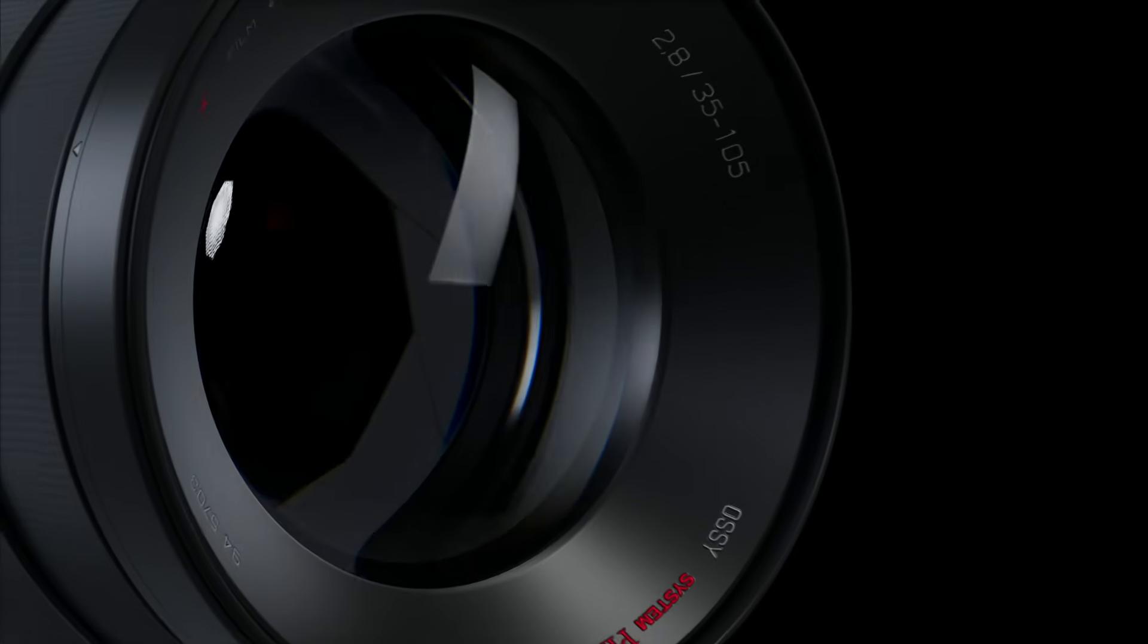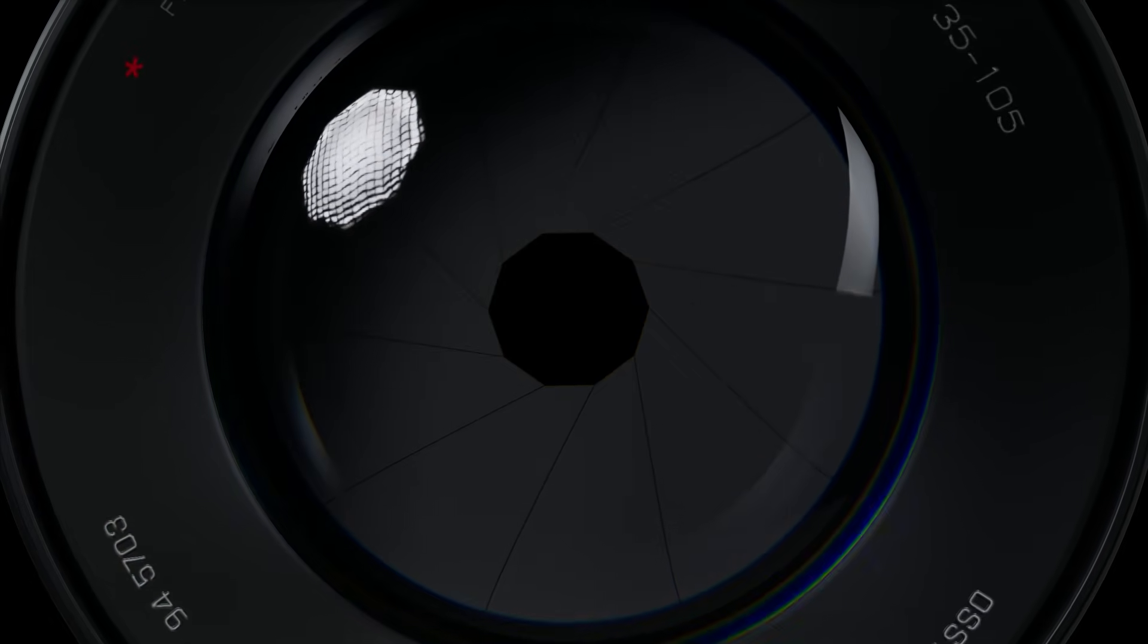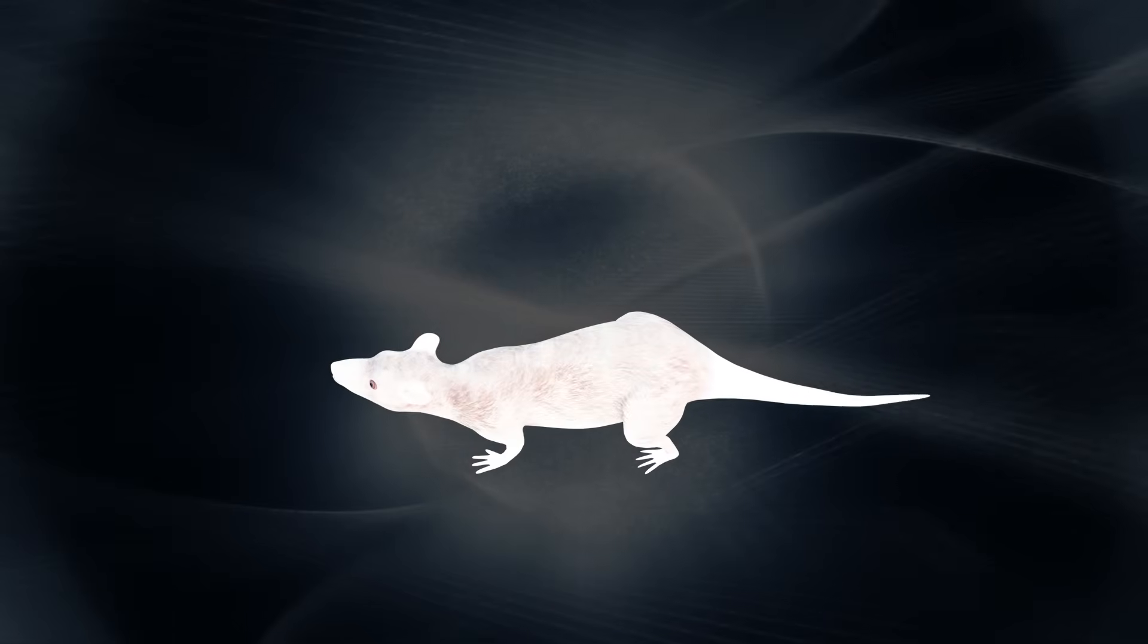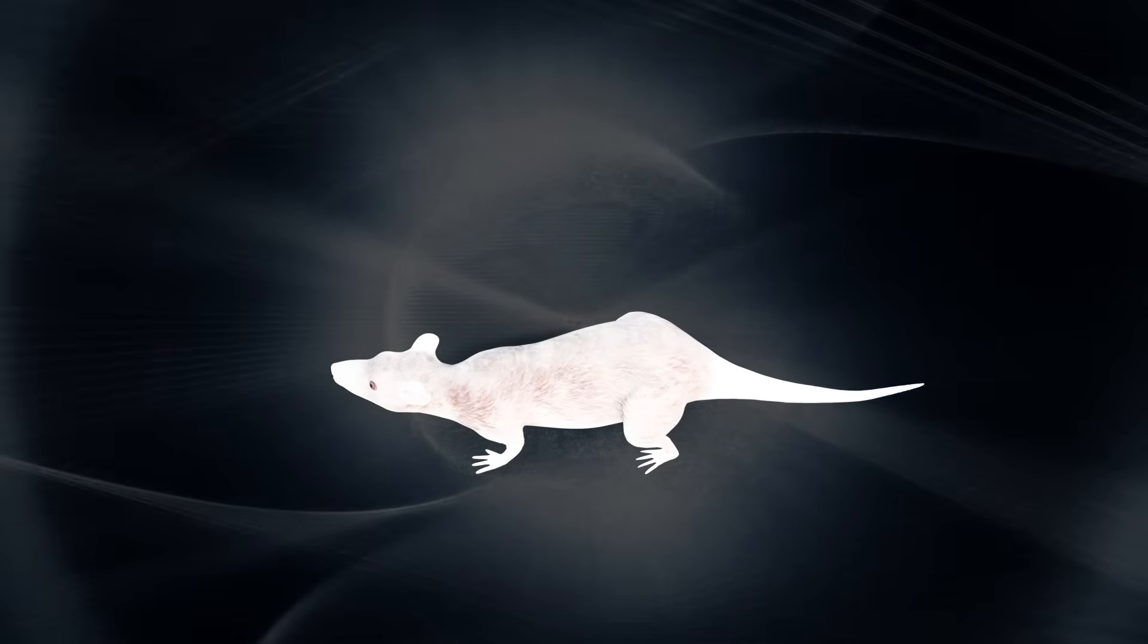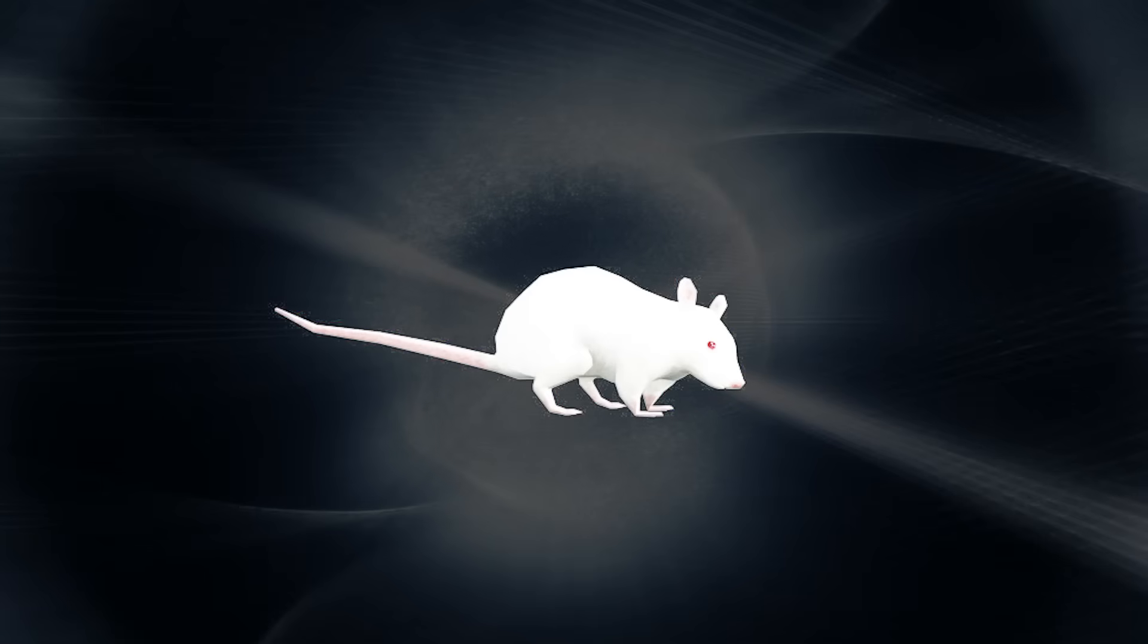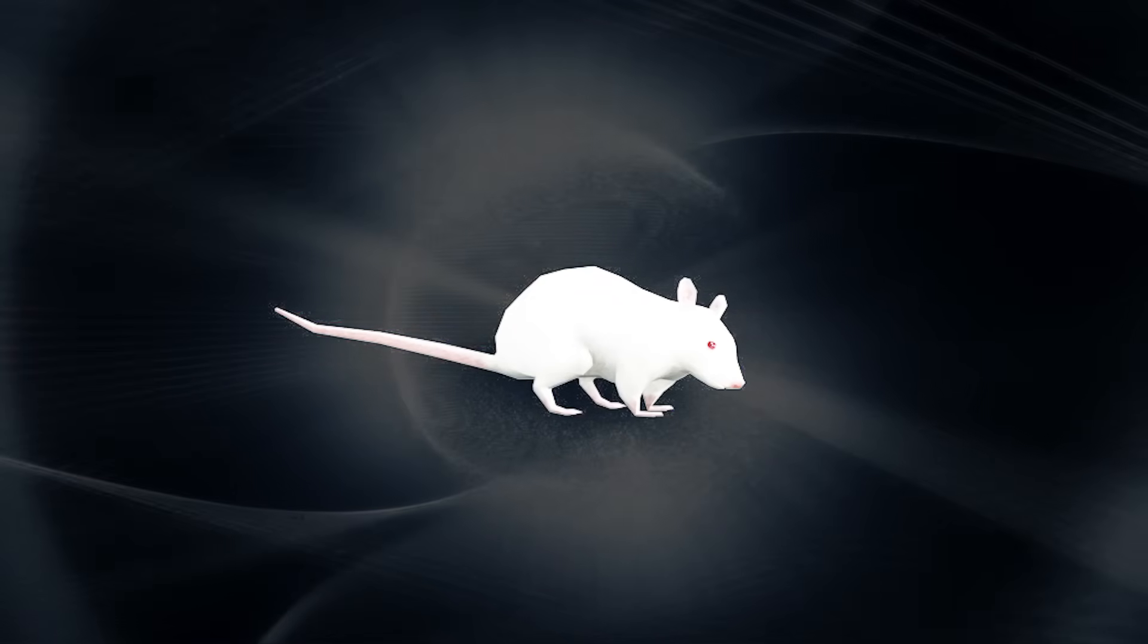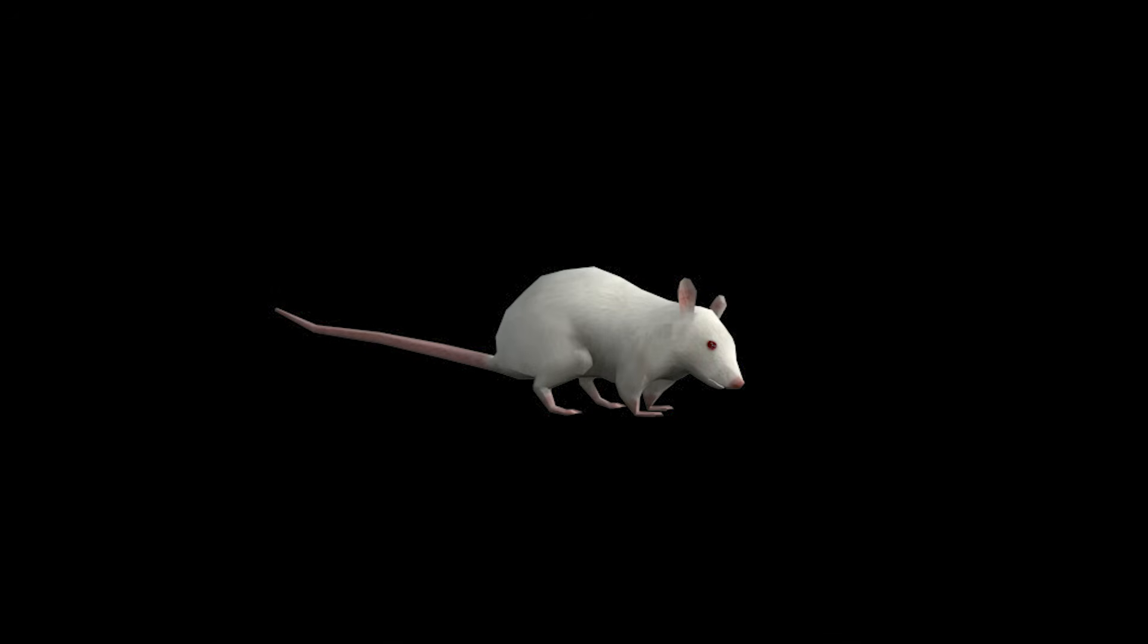Picture this: researchers at a lab set up an ultra-sensitive camera in complete darkness, so sensitive it can detect individual photons. They place a live mouse under the lens, and something absolutely mind-blowing appears on their screen. The mouse is glowing. Not with heat, not with reflected light, but with its own biological radiance. Then comes the shocking part: the moment that mouse dies. Despite its body temperature remaining exactly the same, the glow disappears entirely.